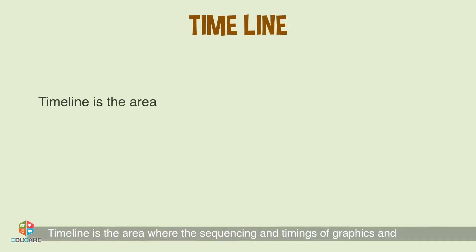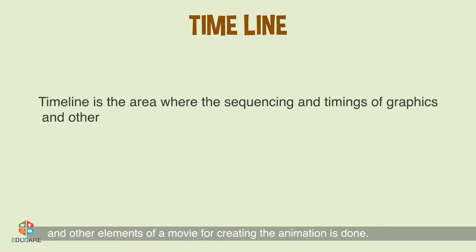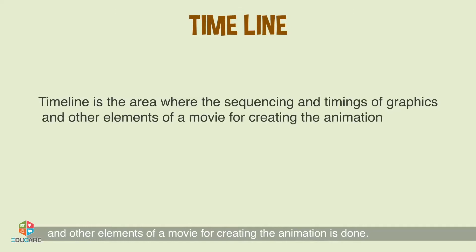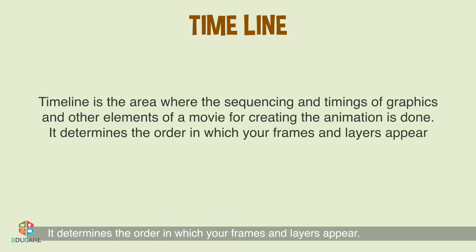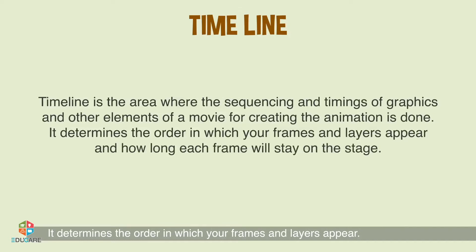Timeline is the area where the sequencing and timings of graphics and other elements of a movie for creating the animation is done. It determines the order in which your frames and layers appear and how long each frame will stay on the stage.